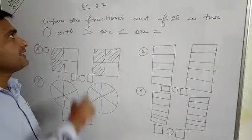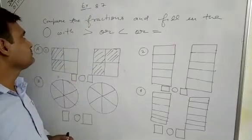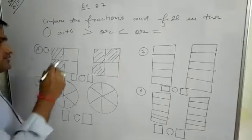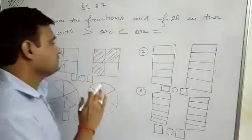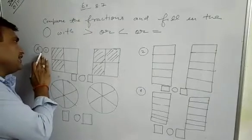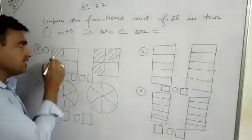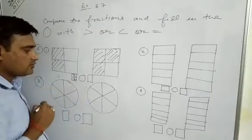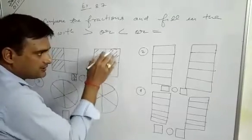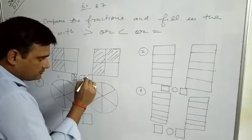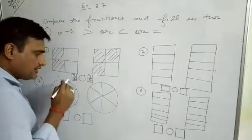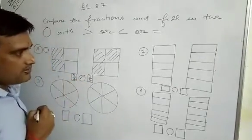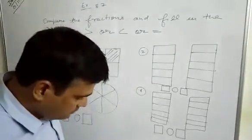Now we start Exercise 8.7: compare the fractions and fill in the circle with a greater than, less than, or equal sign. In the first question, you can see that 2 parts are shaded out of a total of 4, giving the fraction 2 by 4. In the second figure, 3 parts are shaded out of 4, giving 3 by 4. Since 3 is greater than 2 and the denominator is the same, 2 by 4 is less than 3 by 4.